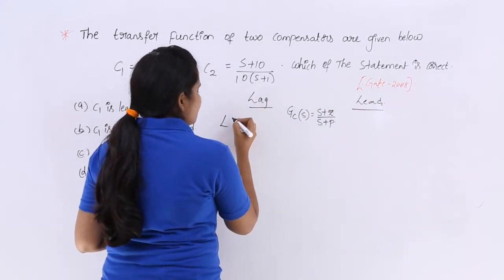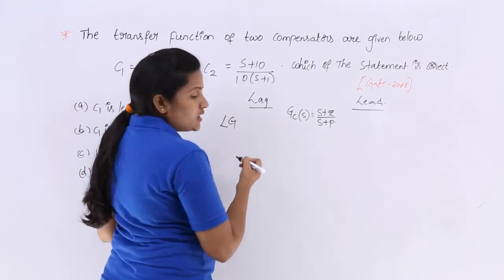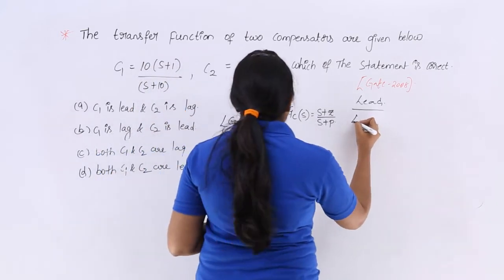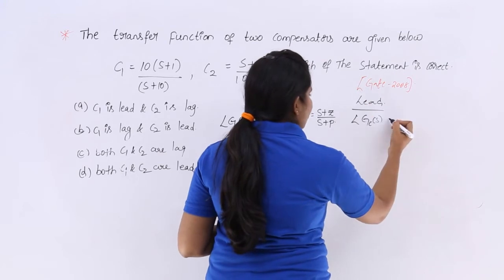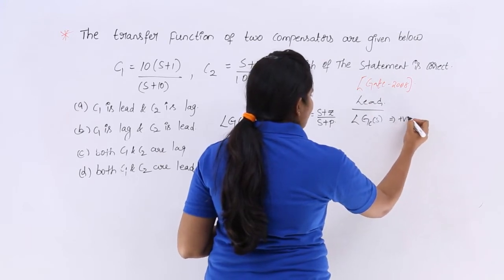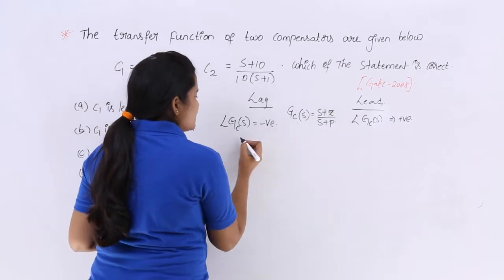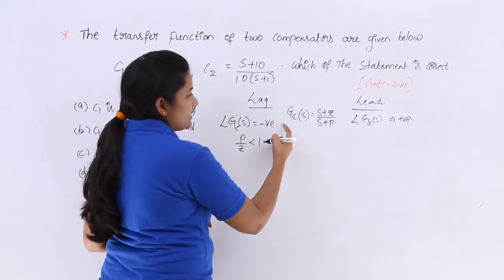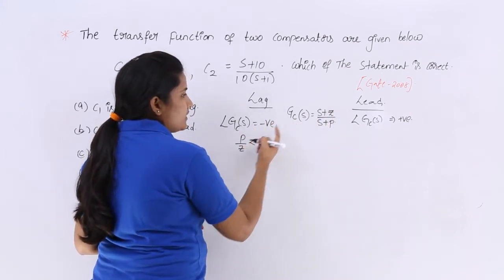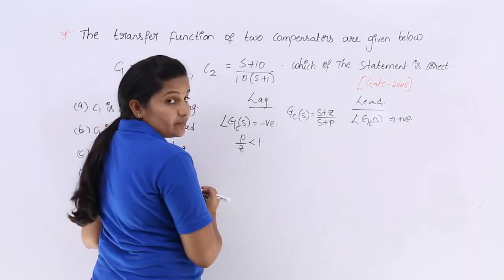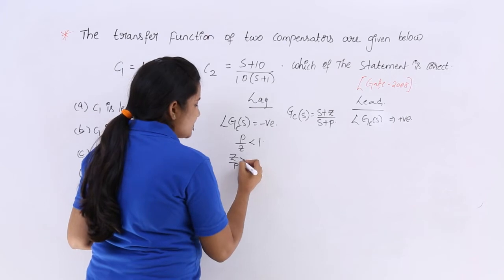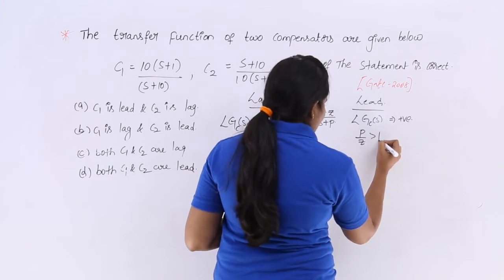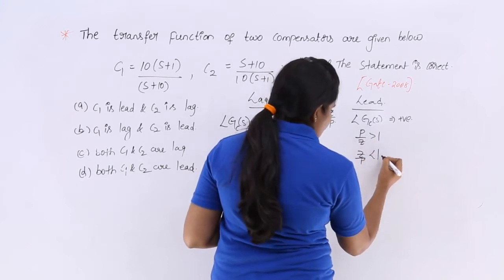For a lag compensator, the phase must be negative, so the phase of Gc(S) must be negative. This indicates P/Z < 1, or equivalently Z/P > 1. For a lead compensator, the phase must be positive, so P/Z > 1 and Z/P < 1.